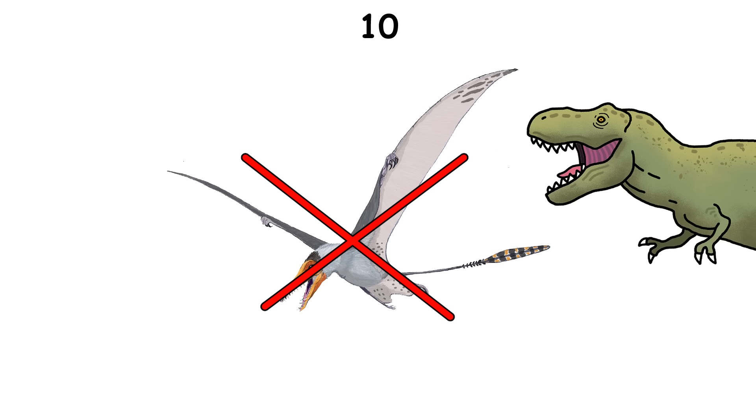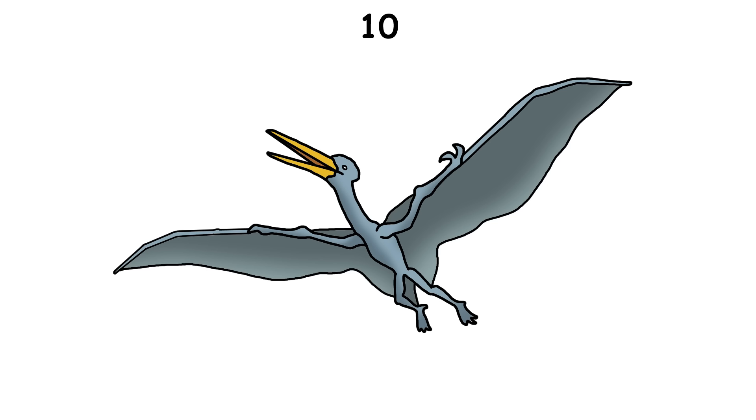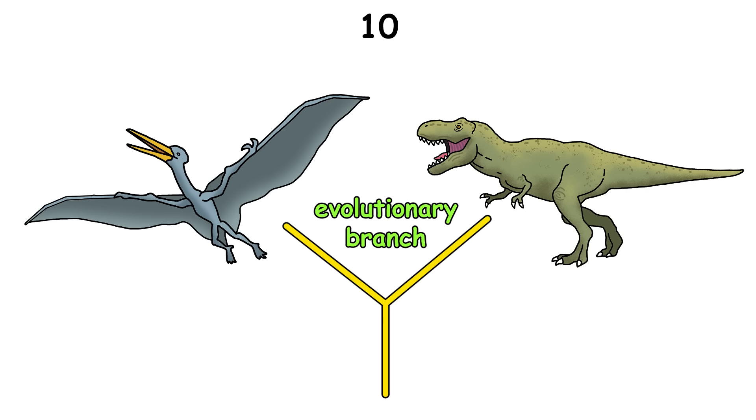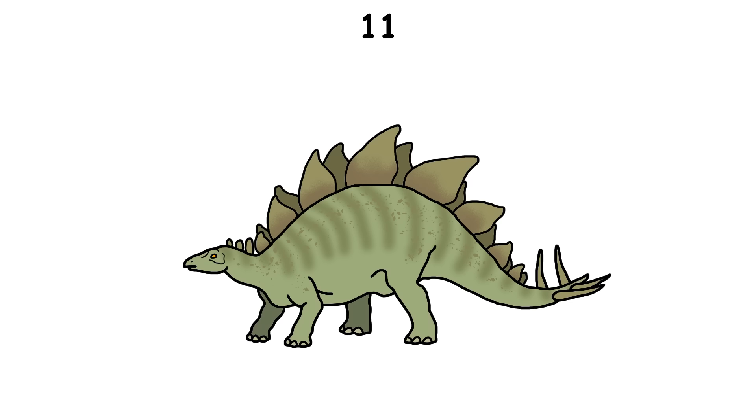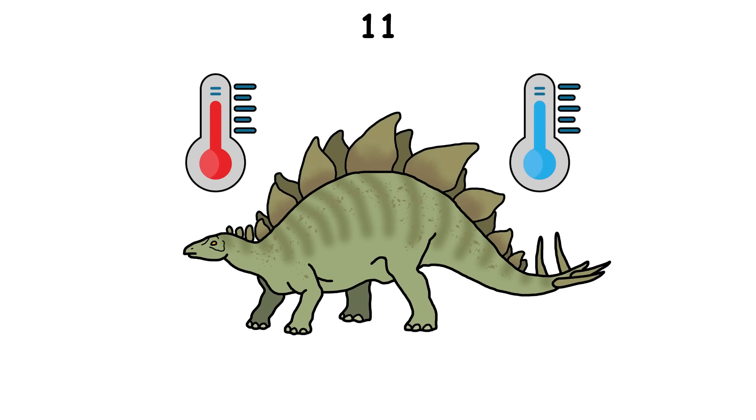The famous pterosaur isn't actually a dinosaur. It's simply a flying reptile. They were close relatives, but on a different evolutionary branch. The large plates on Stegosaurus' back were once thought to be armor, but they were too thin and fragile for defense. One theory is that they acted as temperature regulators instead.